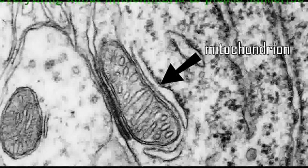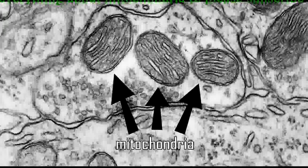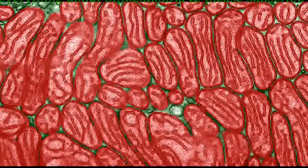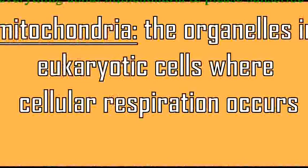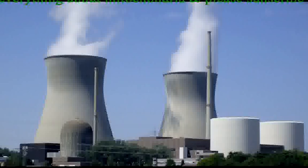This is a mitochondrion. These are mitochondria. So are these. But what the heck are mitochondria anyway? Mitochondria are the organelles in eukaryotic cells where cellular respiration occurs. In other words, mitochondria is where a cell's ATP is made, and so mitochondria have been called the power plants of the cell.